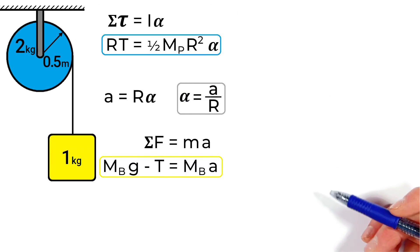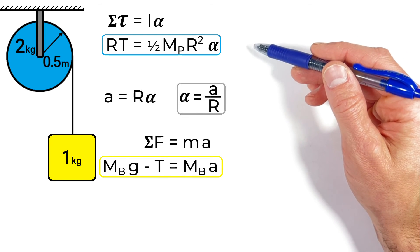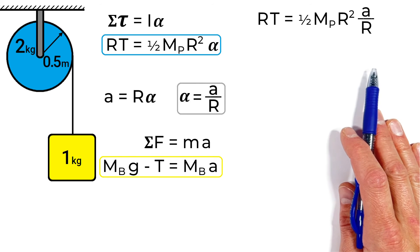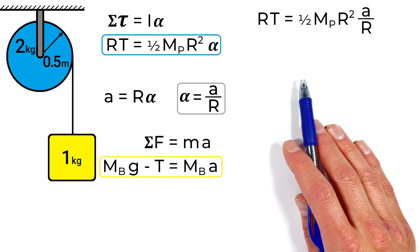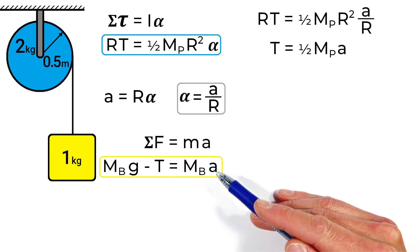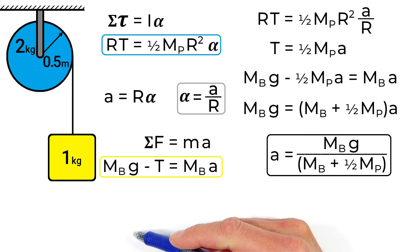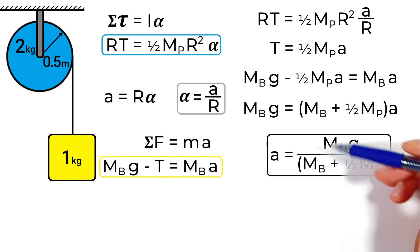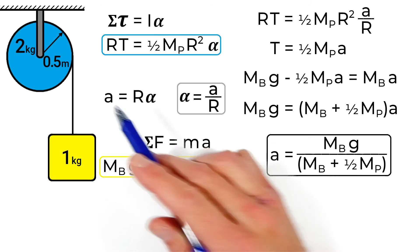Substituting a equals r alpha into the torque equation to eliminate alpha, we get an equation relating tension to the pulley's mass and linear acceleration. The radius cancels out nicely, leaving a clean expression for tension. Substituting that into the block's equation and rearranging, we get an expression for the linear acceleration as a function of both the block's mass and the pulley's mass. Importantly, the radius of the pulley doesn't appear in the final solution — it's completely irrelevant.